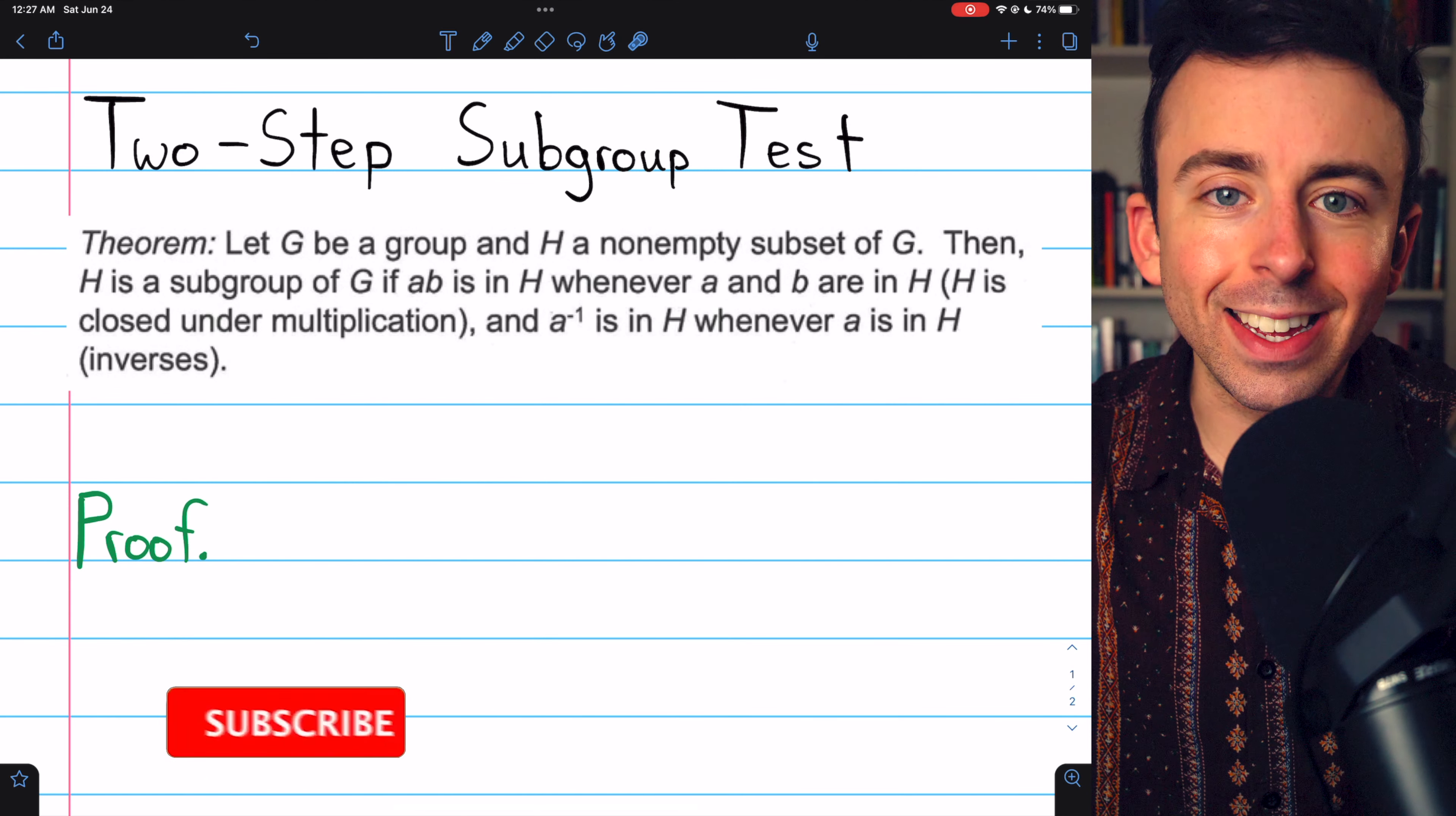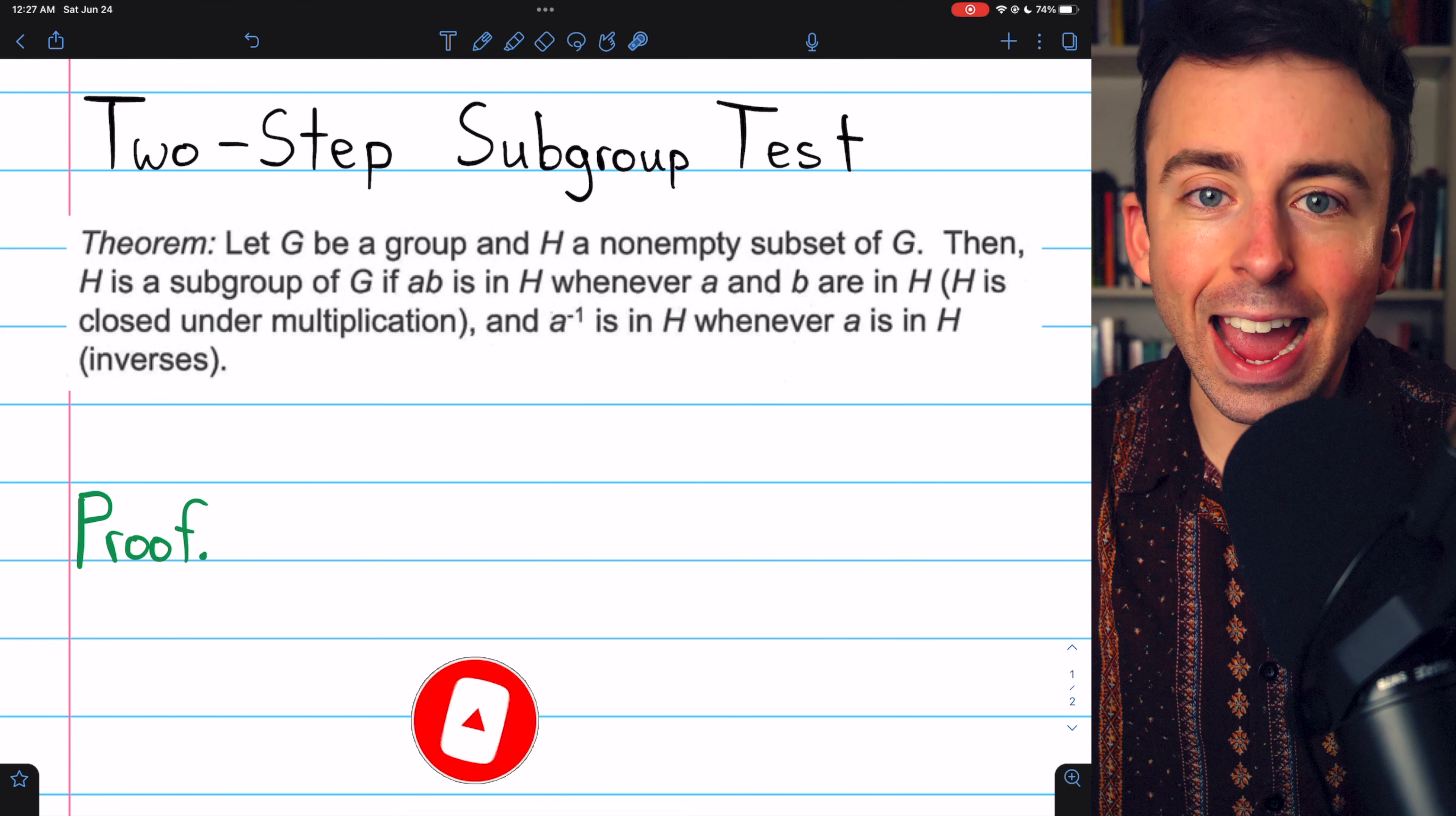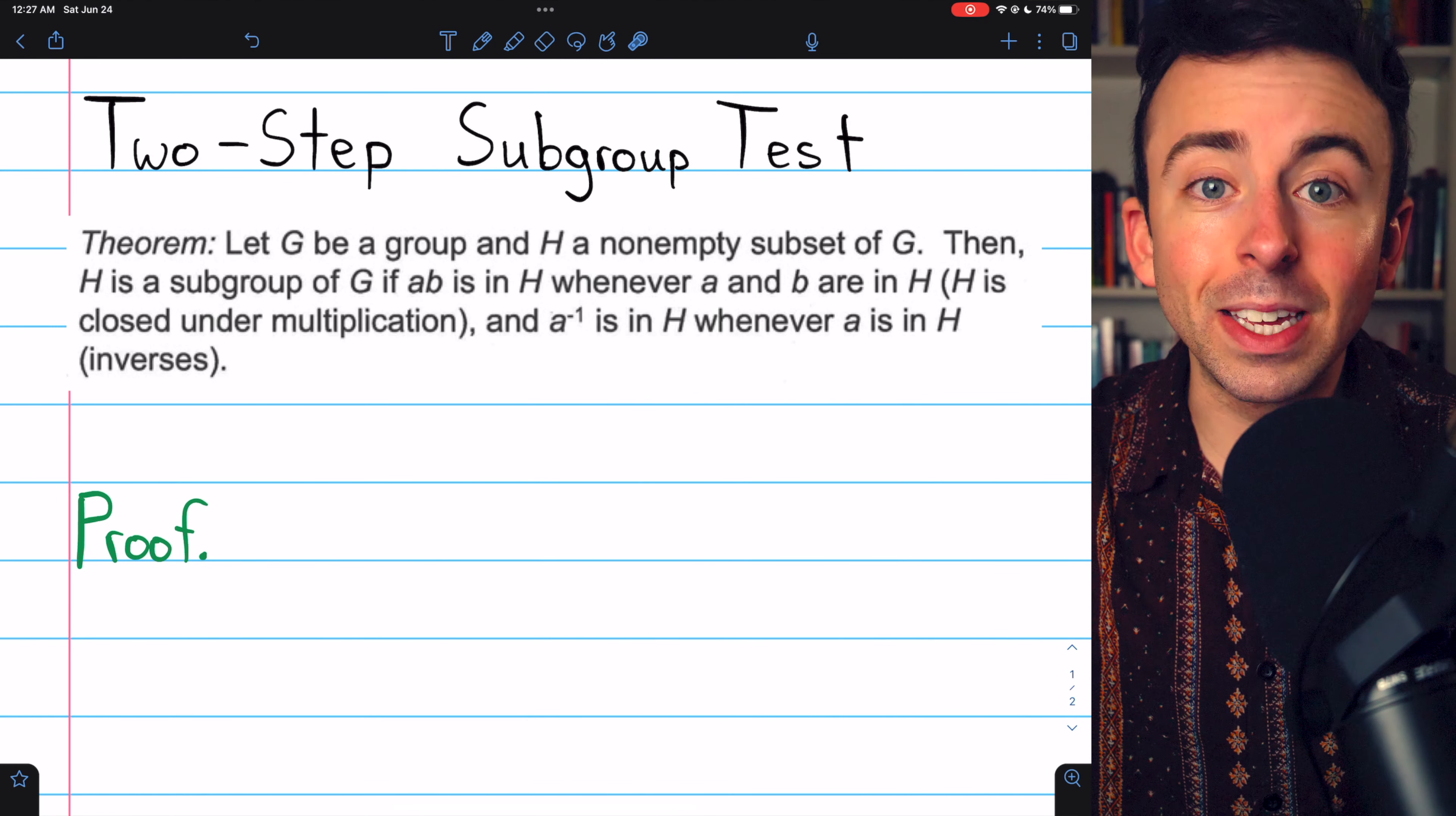A subgroup of a group G is a subset H of G that is also a group, which means that H needs to be associative, have an identity, have inverses, and be closed.